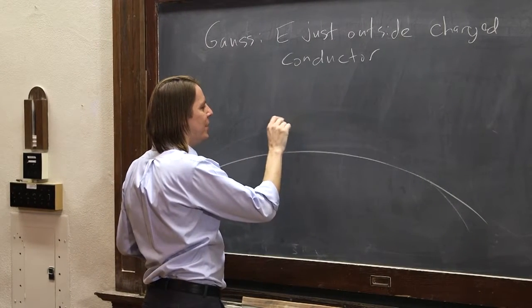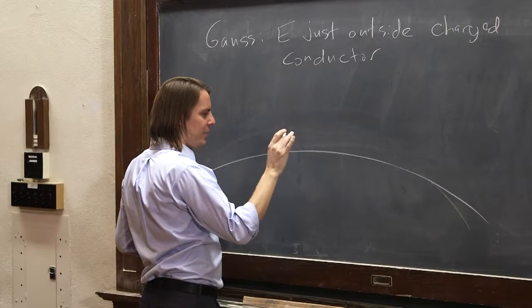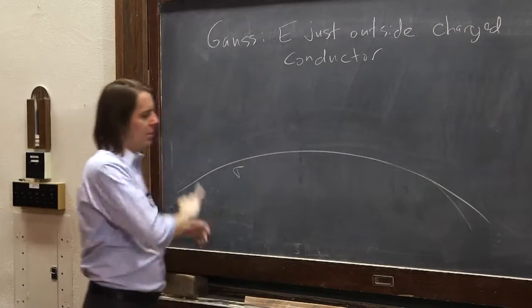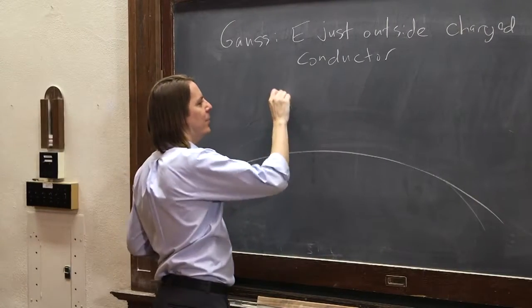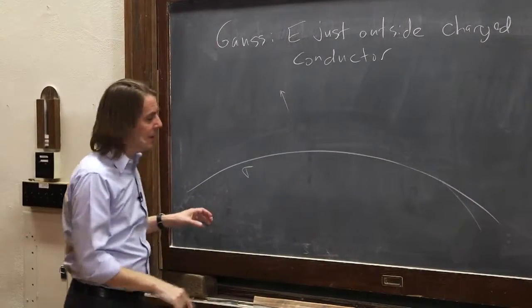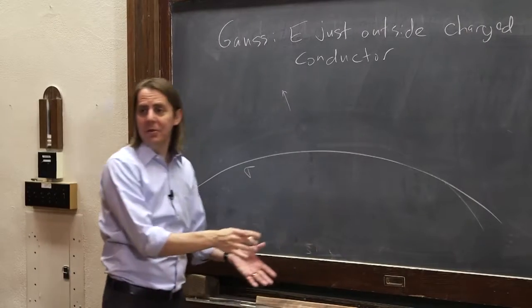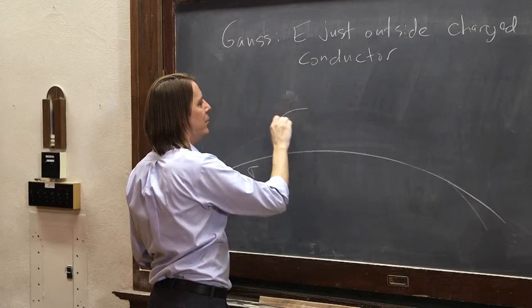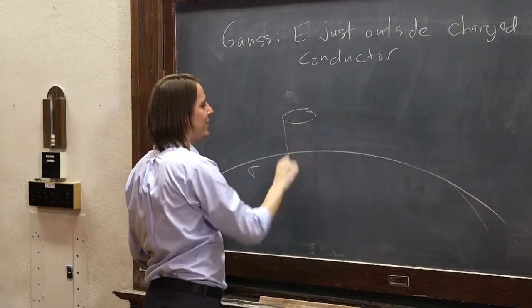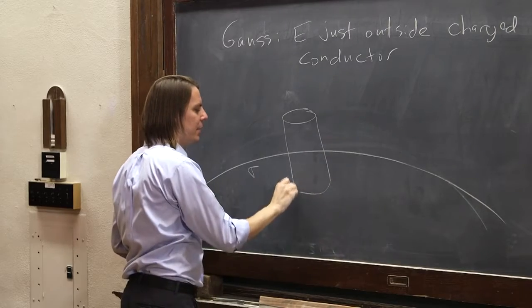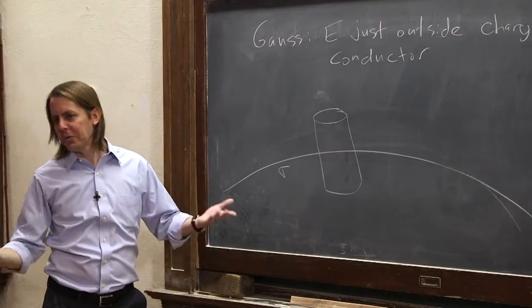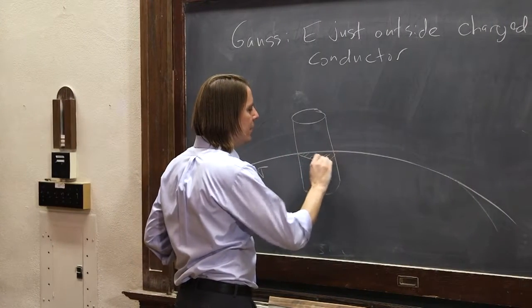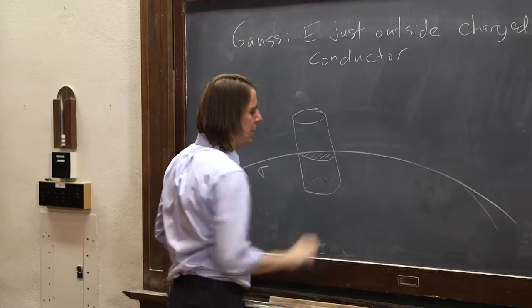So our Gaussian surface, in this case, needs to take advantage of the fact that this charge, sigma, on this big curved surface is going to create an E field that always sticks up. In the metal, it's not going to create any E field. But here, it's always going to point up. So that's the case where we want something with a flat surface with an A vector pointing up. So that's this Gaussian cylinder. Or we could do the pillbox, but the cylinder is easier to draw.